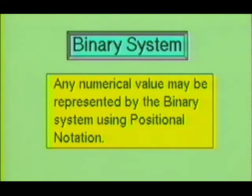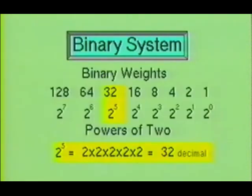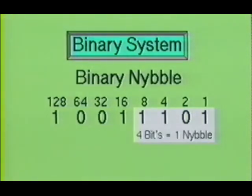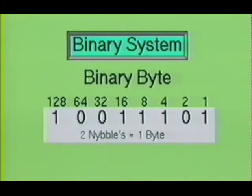Any numerical value may be represented by the binary system using positional notation. For example, a number with a binary weight of 32 will have a power of 2 to the 5th power. A single binary digit, the 0 or 1, is generally referred to as a bit. Four bits are known as a nibble, and two nibbles make up a byte. Many computer systems will process a byte as a single unit.